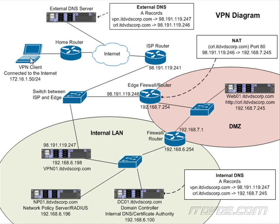So if this VPN client is connected to the VPN and it's trying to get to google.com or some other website out there on the internet, that request is actually going to be passed through the tunnel. It's going to go through to our internal network, hit our VPN server, and then travel out through our edge firewall, go out to the internet, go to google.com, and then come back through our internal network, through our VPN server, and back to our VPN client.